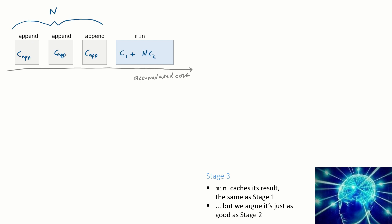Let's give it some notation. Let's say that the running time of each of the calls to append is c_app, and the running time of min is c1 plus n times c2, where n is the number of newly appended items that the min function will have to iterate through.